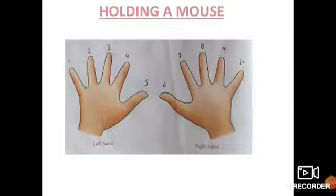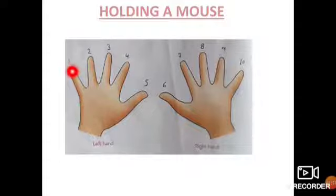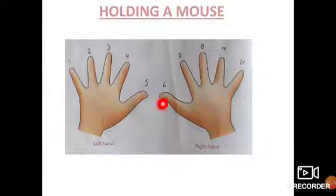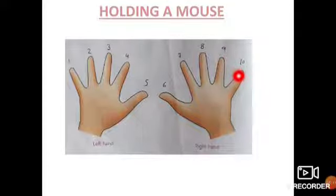Next we have holding a mouse. Let us conduct an activity — count the number of fingers on both hands. On the left hand, number your fingers 1, 2, 3, 4, 5. Then on the right hand, continue the numbering: 6, 7, 8, 9, and 10. Remember the number assigned to each finger.